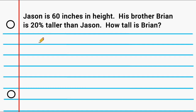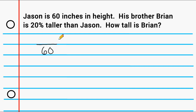The problem says that Brian is taller than his brother Jason, and states that he is 20% taller than Jason. So all we have to do is figure out what 20% of 60 inches is, and then take that number of inches and add it on to 60. We're going to start by considering 60 inches as our total, and we want to figure out what part of 60 is equivalent to 20 out of 100.